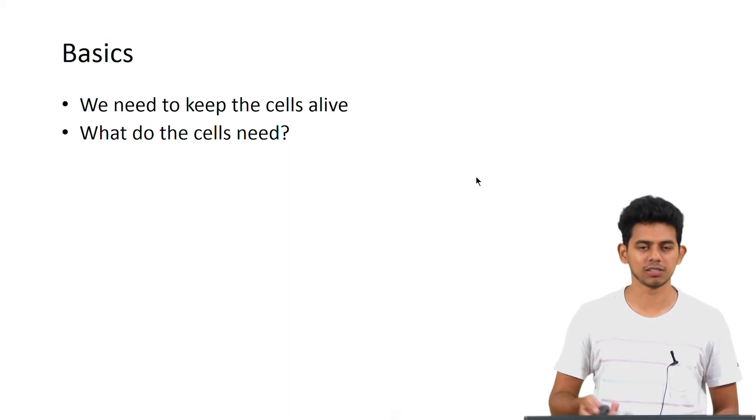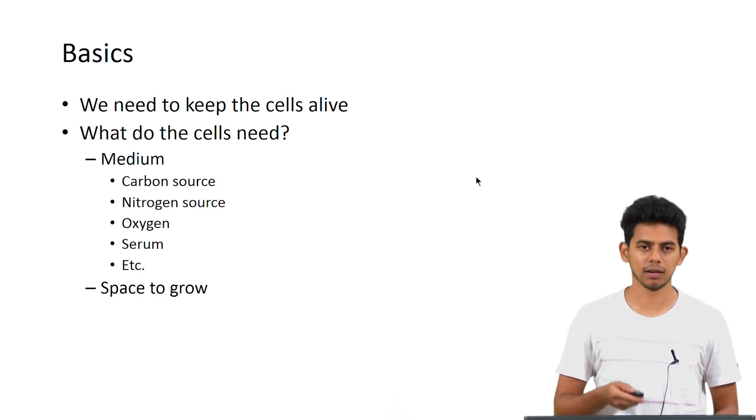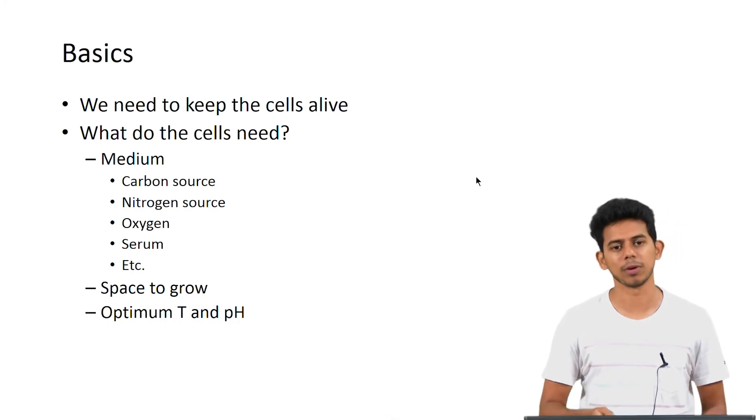The basics that we look at is, what do we need to keep the cells alive? Obviously, we need a media and this media needs a carbon source, a nitrogen source, oxygen and serum and other things like growth factors. The cells need space to grow and also you need an optimum temperature and pH.